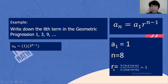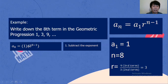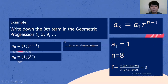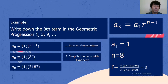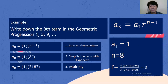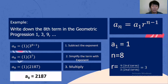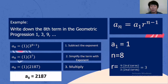We substitute the given values: a sub 1 is 1, r is 3, n is 8. First process: subtract the exponent — 8 minus 1 is 7. Second process: simplify the term with exponent — 3 raised to 7 is equal to 2,187. Third process: multiply — 1 multiplied by 2,187 is 2,187. So the 8th term in the geometric sequence 1, 3, 9 is 2,187.